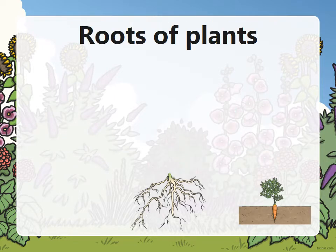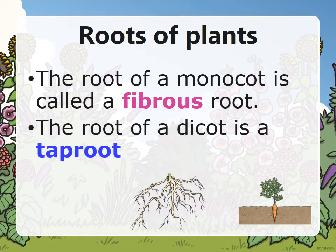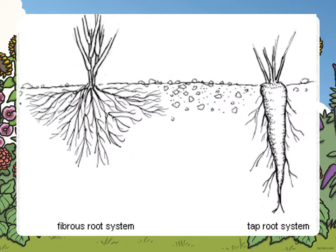Now we're going to talk about the roots of plants. The roots of a monocot are called fibrous roots. The root of a dicot is called a taproot. Fibrous root, taproot.